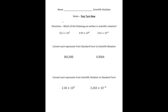Welcome back. Let's see how you did. The first part asked you to identify which are written in scientific notation — remember, the a value must be greater than or equal to one but less than 10. So 35.2 times 10 to the fifth is not scientific notation. But 4.99 times 10 to the eighth is, and 5.01 times 10 to the 11th also is.